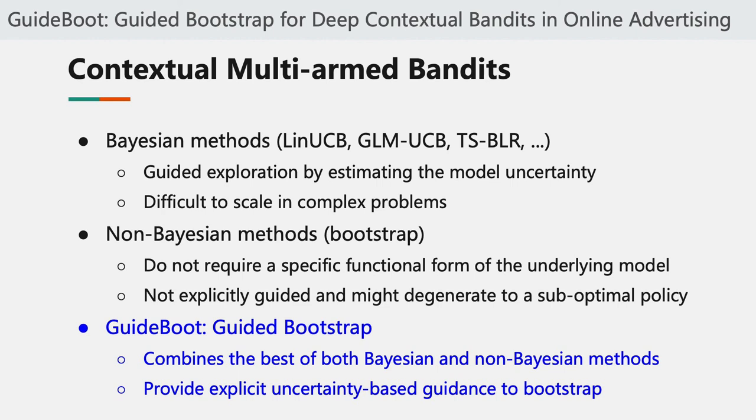In contrast, non-Bayesian methods do not require a specific functional form of the underlying model, so they are more suitable for complex problems. People often use typical choices such as the epsilon-greedy heuristic or the bootstrap heuristic. However, the exploration behavior for non-Bayesian methods is not explicitly guided, so the overall policy might eventually degenerate to a suboptimal greedy policy. Therefore, it remains largely unsolved to develop practical methods for complex deep contextual bandits.